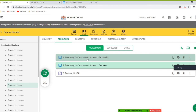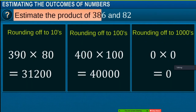Now let us estimate the product of 386 and 82. After rounding off 386 and 82 to the nearest tens, we get the estimated product as 31,200. To the nearest hundreds, the estimated product is 40,000. Rounding off to the nearest thousands, the estimated product is 0.